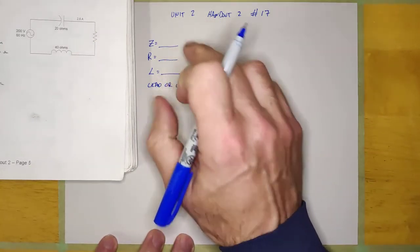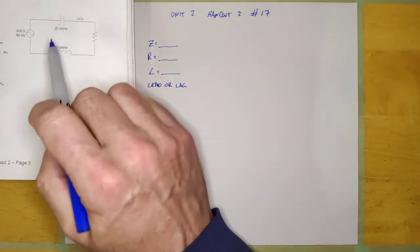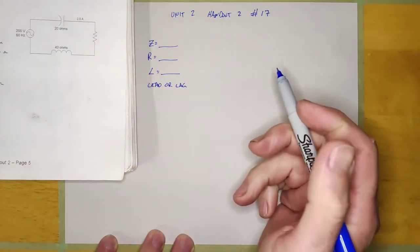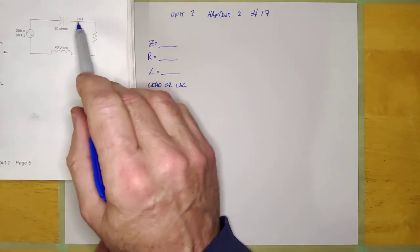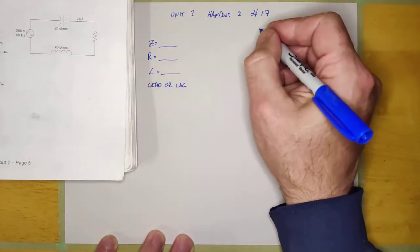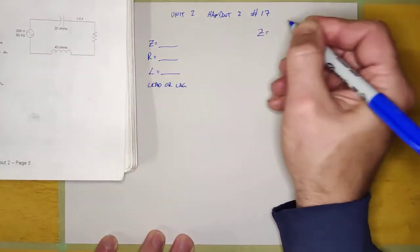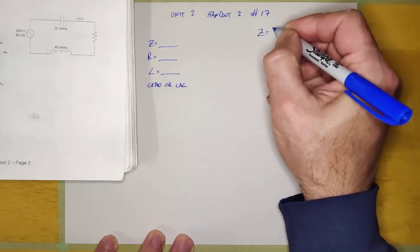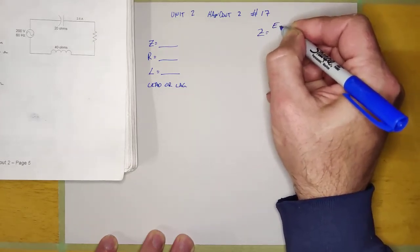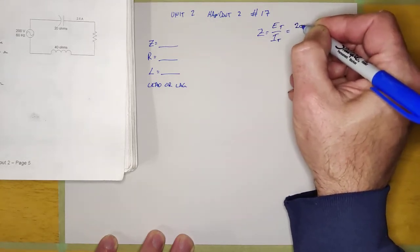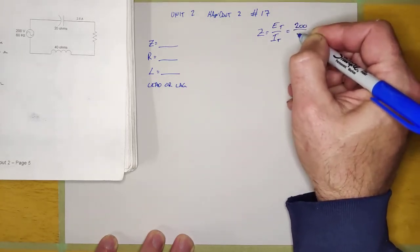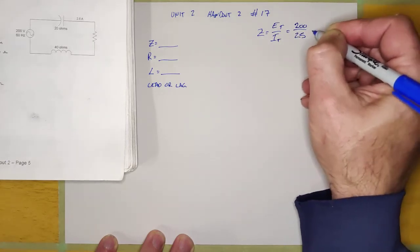It's asking for the impedance, and guys, we aren't going to be able to calculate the impedance with an impedance phasor diagram because I don't have enough information, but look, it's 200 volts and 2.5 amps. That means I can calculate my impedance using Ohm's law. Z for any circuit is going to be E total over I total, and so it's 200 over 2.5 amps,